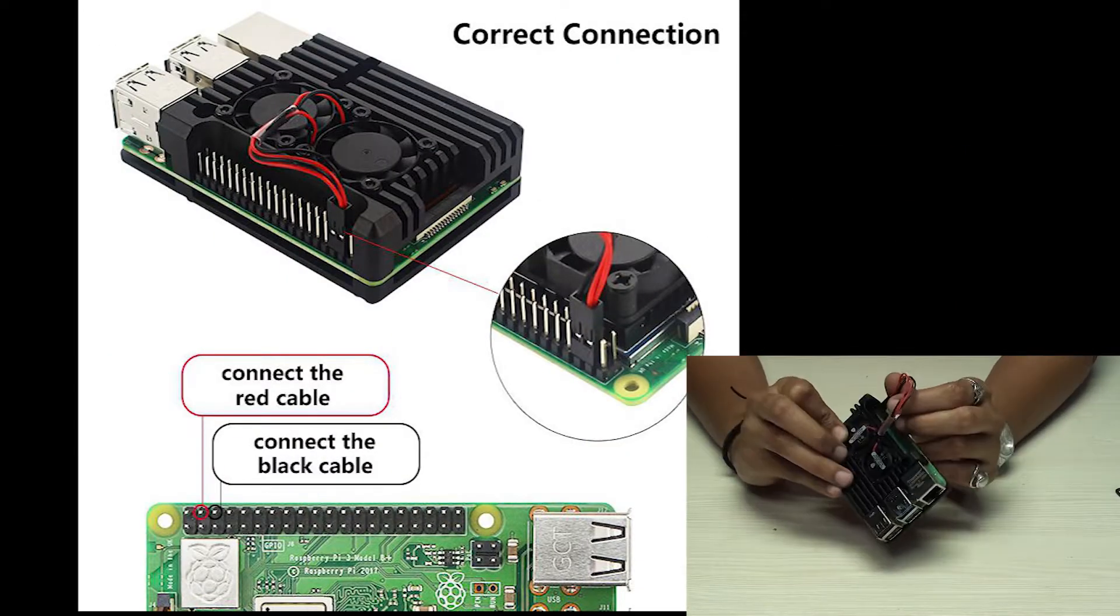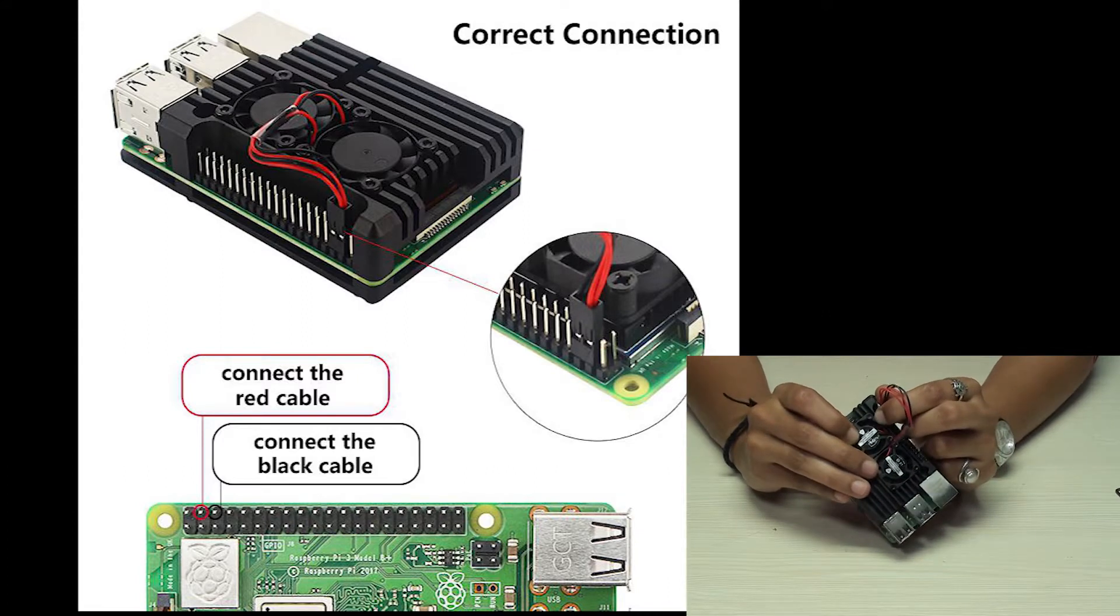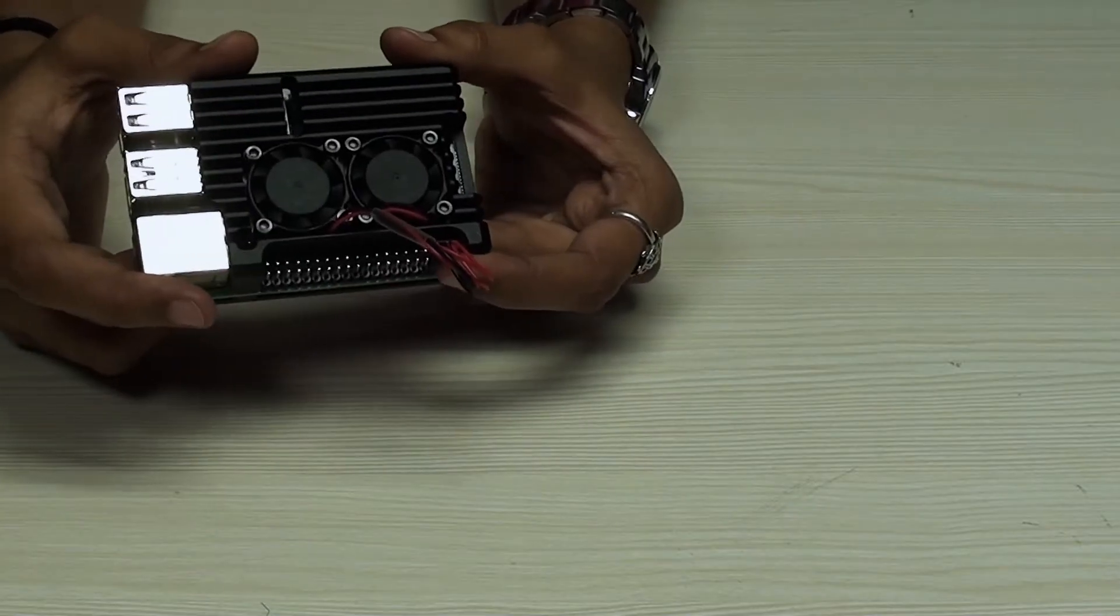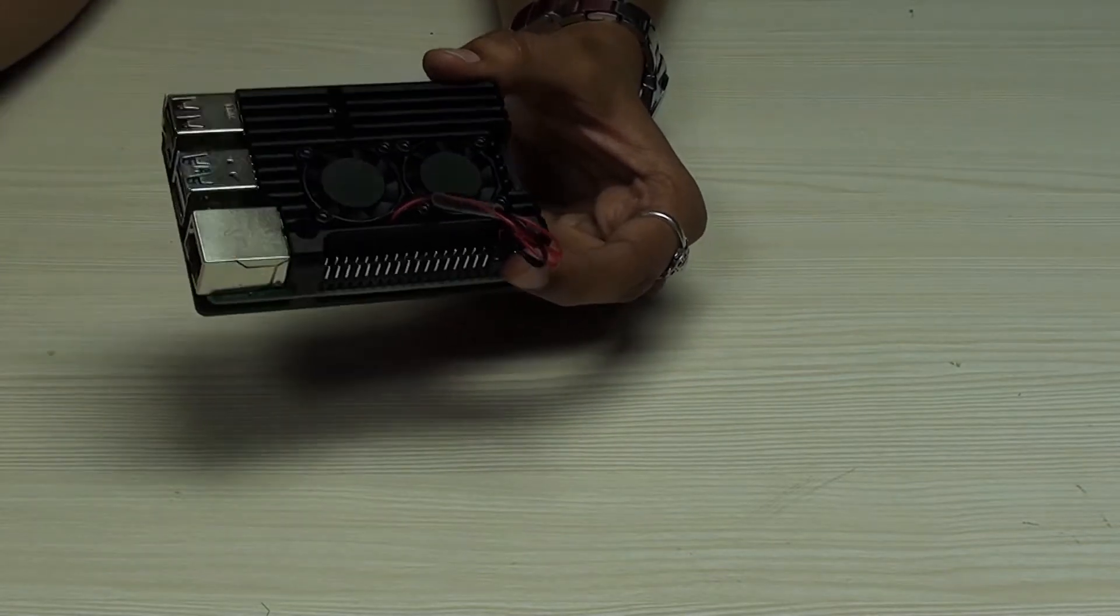Now connect these fan wires to Raspberry Pi GPIO pin 4 and 6, which is 5V and ground. Now let's see if the fan works. I'm connecting the power supply.